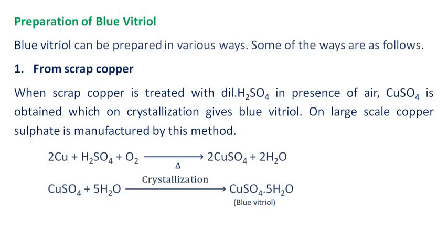Blue vitriol can be prepared in various ways. From scrap copper: when scrap copper is treated with dilute sulfuric acid in the presence of air, copper sulfate is obtained, which on crystallization gives blue vitriol. On a large scale, copper sulfate is manufactured by this method.